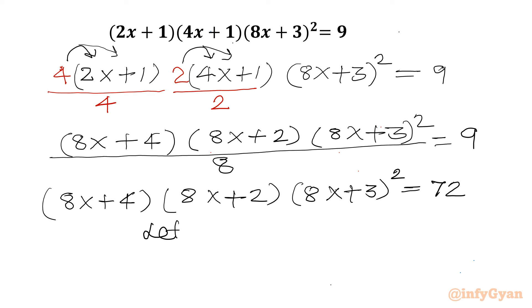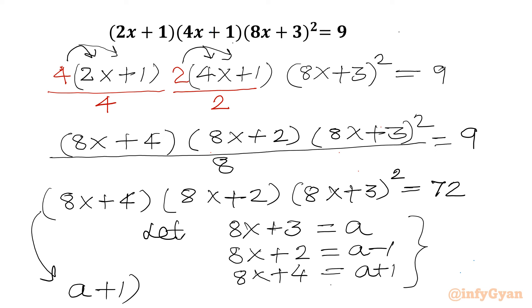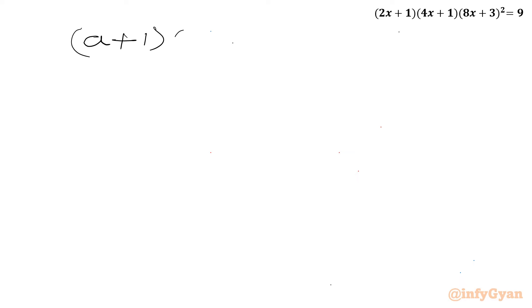Now let us use substitution. Let 8x+3 = a. From this, 8x+2 = a−1 and 8x+4 = a+1. Applying these three substitutions, our equation becomes (a+1)(a−1)(a²) = 72.